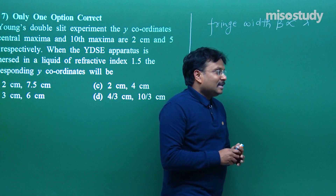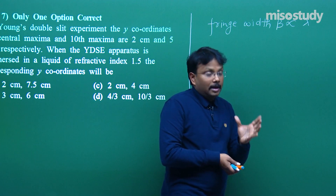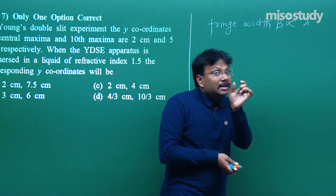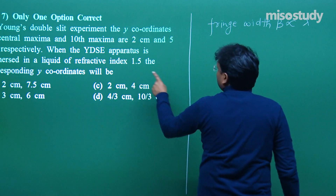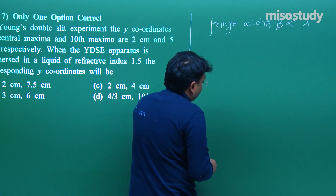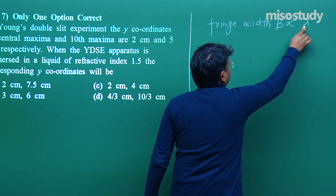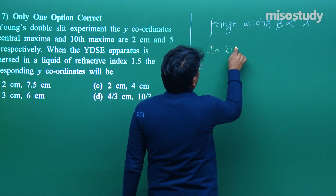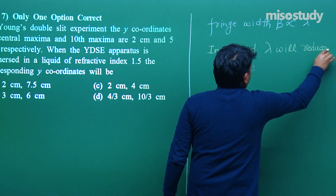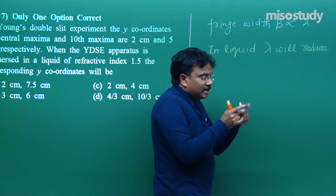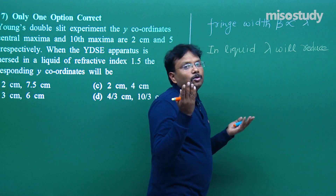Why am I saying this? Remember, when we place the entire setup in water or any liquid, as I showed in a separate video, the entire situation changes by the refractive index. So lambda will reduce in liquid. The relation is λ_medium = λ_air / μ. The slit separation d and distance D don't change, so only lambda has to decrease. Therefore, in liquid, lambda will reduce.